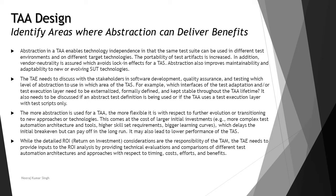On the other side, the TAA needs to discuss with stakeholders in software development, quality assurance, and testing which levels of abstraction to use in which areas of the task. Deciding this will become really important — at what depth it is going to be a concrete level, a logical level, and what information is required to manage with respect to the abstraction. For example, which interfaces of the test adaptation and test execution layer need to be externalized. There are a few things which need to be managed internally and a few things managed from third-party sources as well.